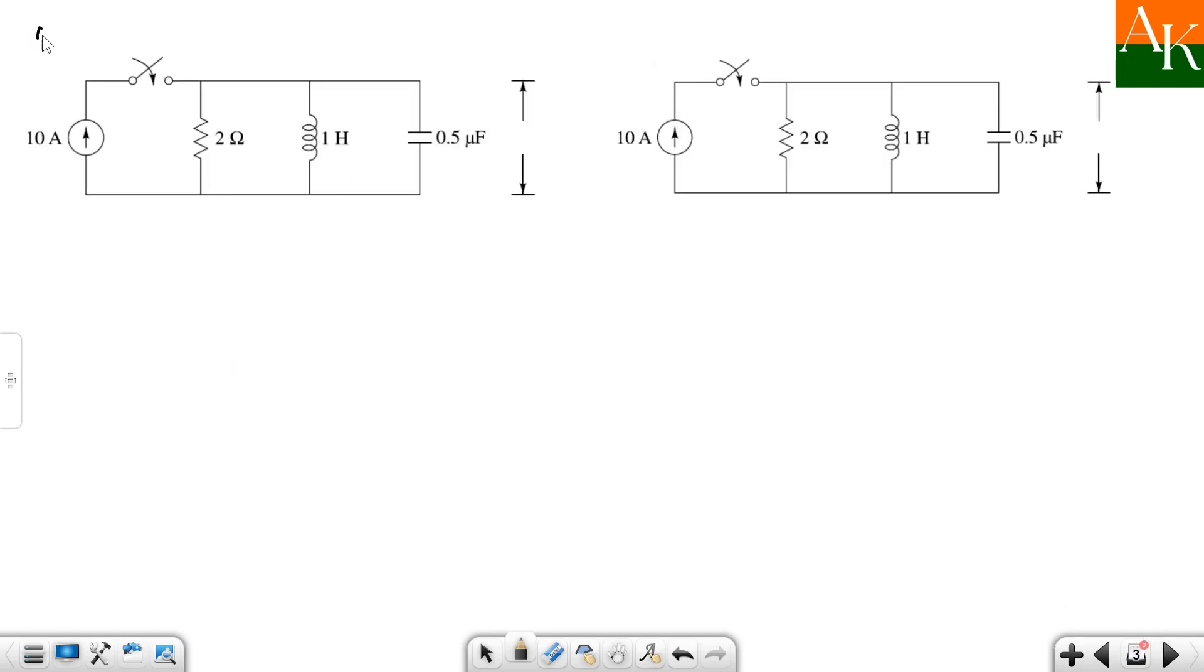First of all, at t equals 0 minus, what is happening? The switch is open. So that you have to note down. Switch is open and nothing is flowing through this resistor or this inductor or this capacitor and this voltage you have to show as V of 0 minus. The same thing you can even represent over here V of 0 minus. So V of 0 minus is 0 volt.